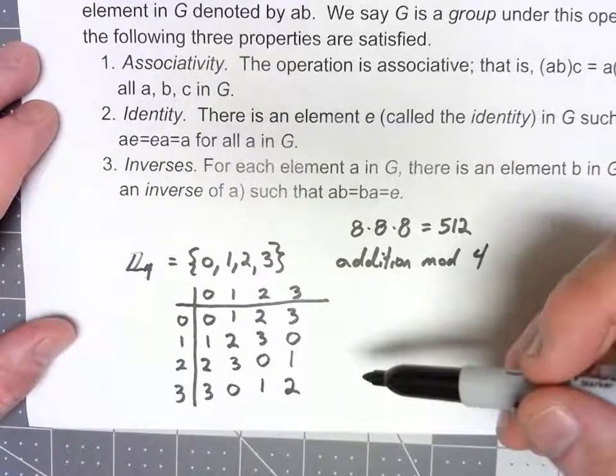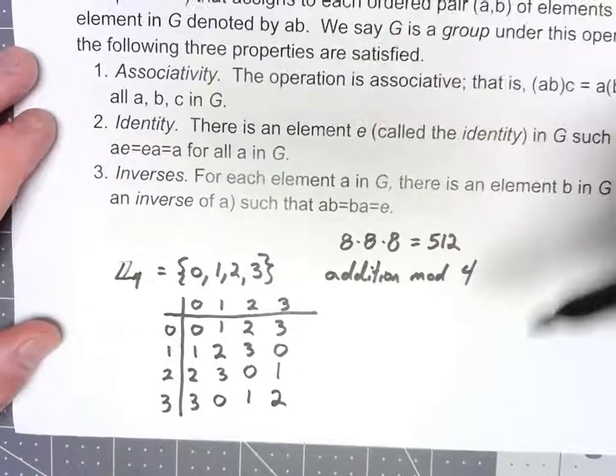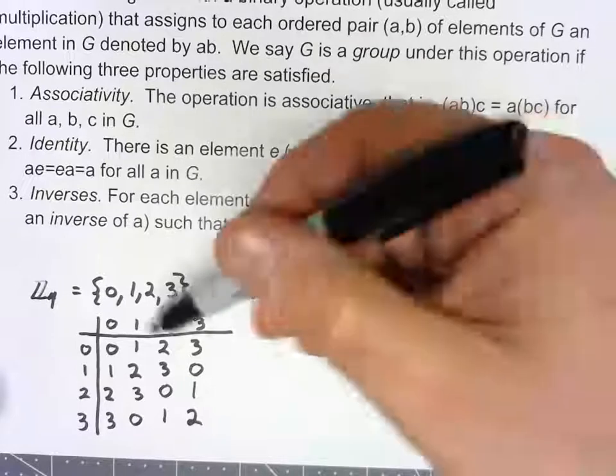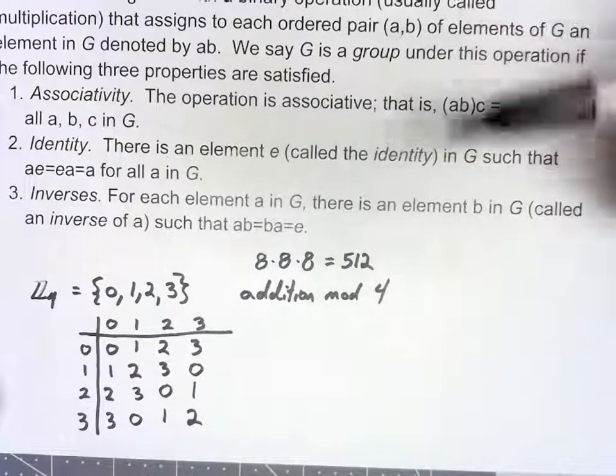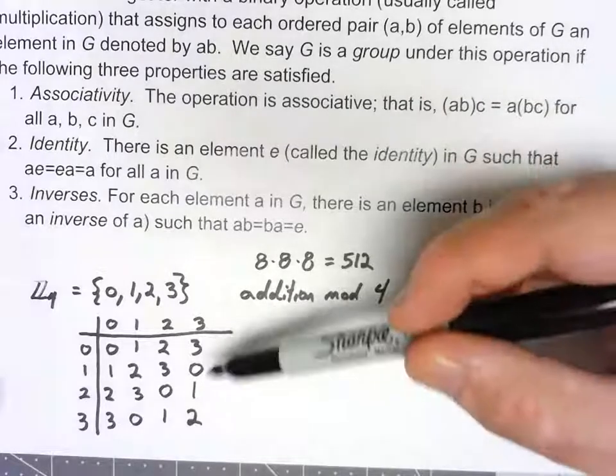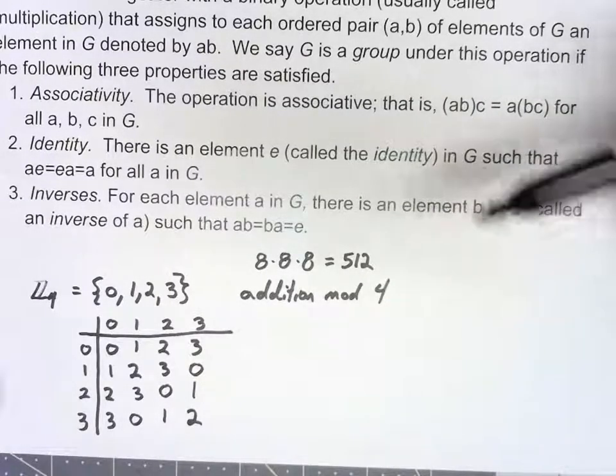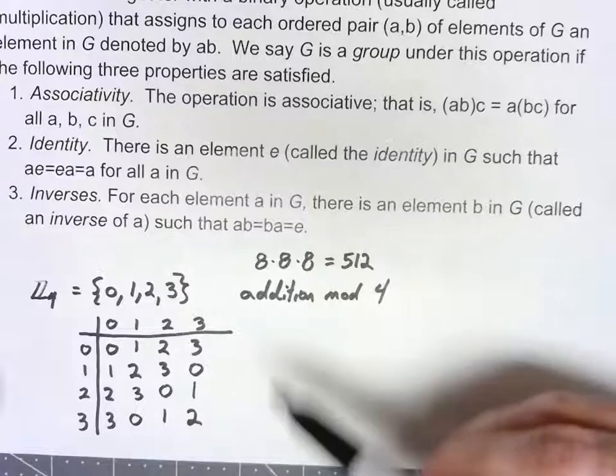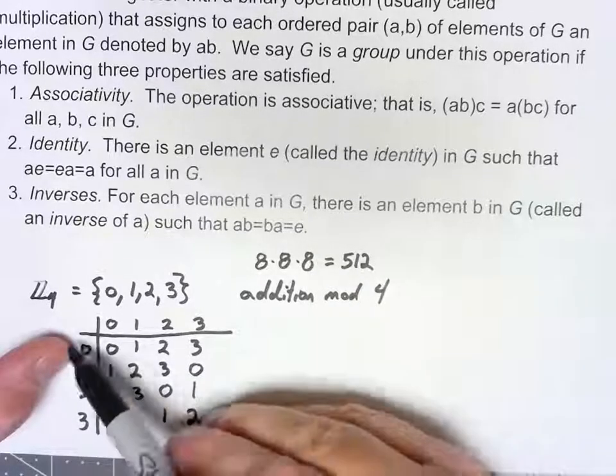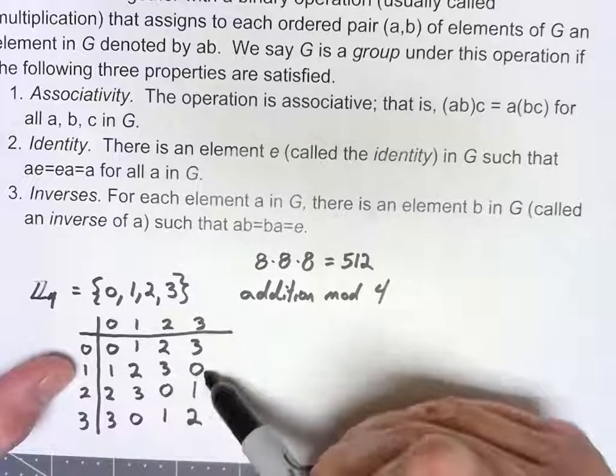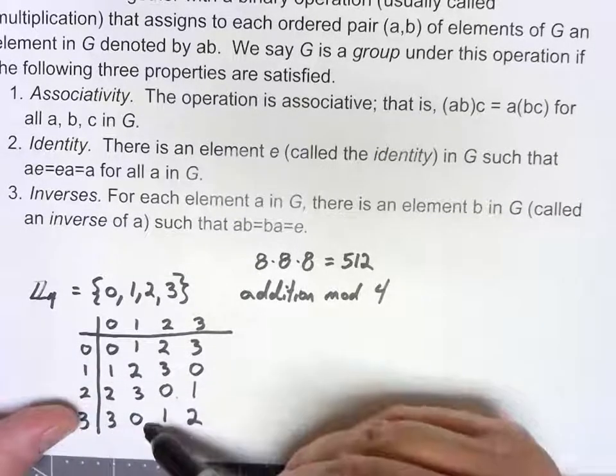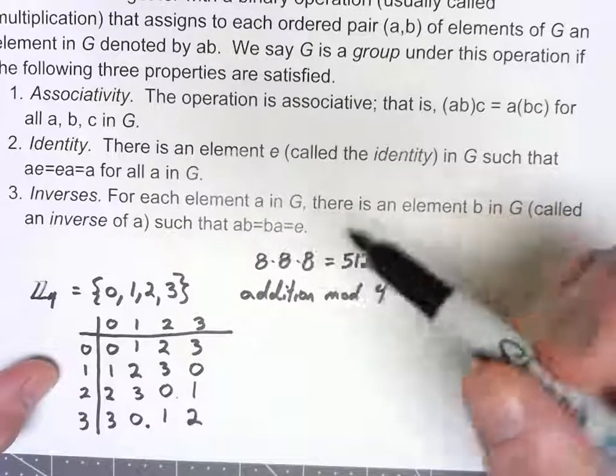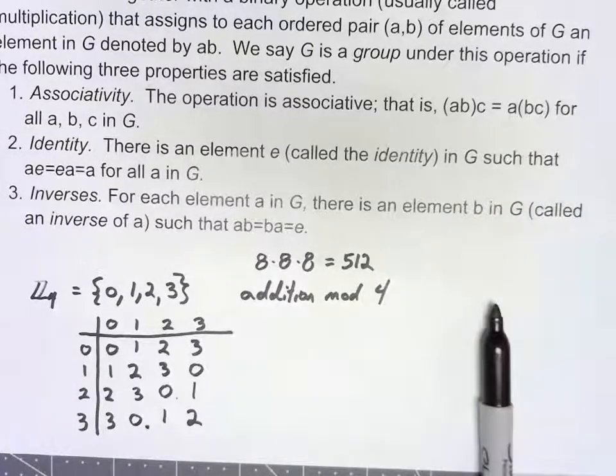I'm claiming that this is a group. It's associative because we're really just using basic addition here. Even though we're taking it mod 4, we're doing the basic addition property. There is an identity. Adding 0 doesn't change it, no matter what order we do things in. And there are inverses. 0 plus 0 is 0, 1 plus 3 is 0, 2 plus 2 is 0, 3 plus 1 is 0. Every element has an inverse.